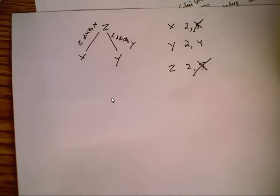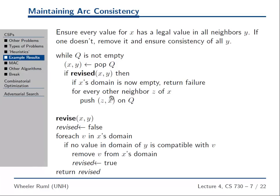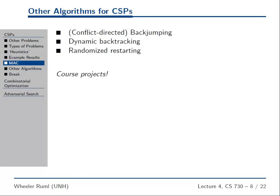That's MAC. It's not always worth all the effort — sometimes all this checking does take time, and if it doesn't cause enough propagation because the constraints are too loose, it's not worth it. There have been a lot of advances in how to implement MAC. This is a fairly naive implementation — it's OK but not the fastest. There are faster implementations, and MAC used to be considered very heavyweight and wasn't used much, but these days it's used more and more, so it is worth knowing about. There are lots of other algorithms for CSPs we won't cover in this class, but they make great course projects.